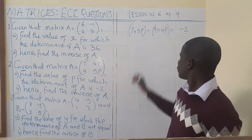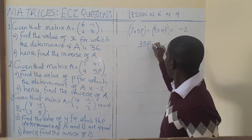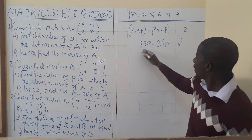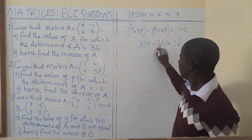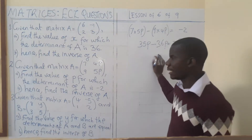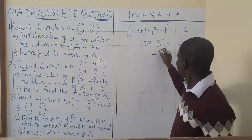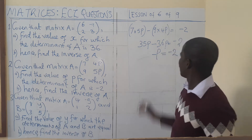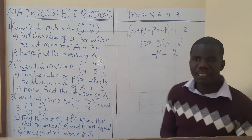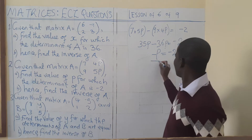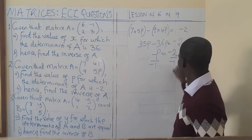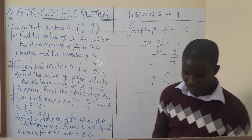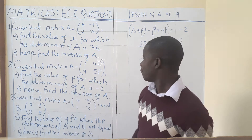So we get 35P minus 36P equals negative 2. We are subtracting a bigger number from a smaller number, so this gives us negative P equals negative 2, which is the same as negative 1P. Dividing both sides by negative 1, P equals 2.